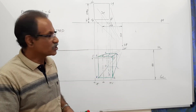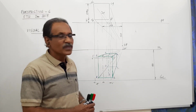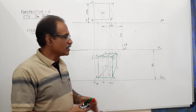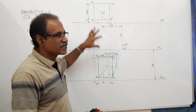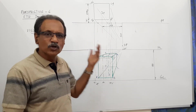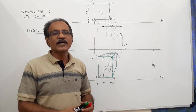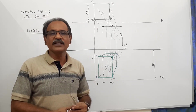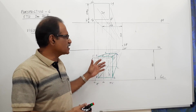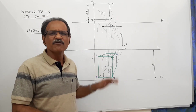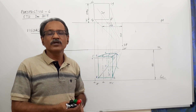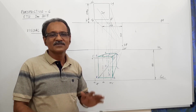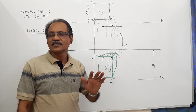Similarly, you can have a square pyramid instead of a prism — we will do that as another university question, as it has come many many times in various universities. This is a very frequently repeated, simple question. Thank you.